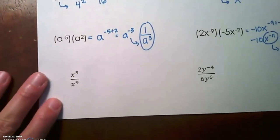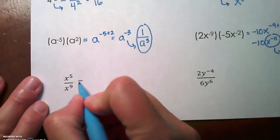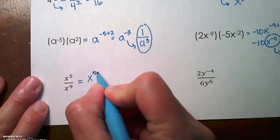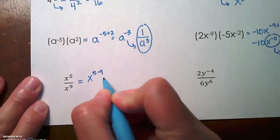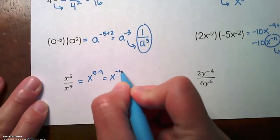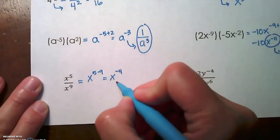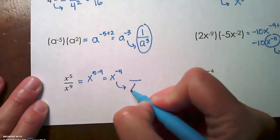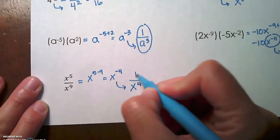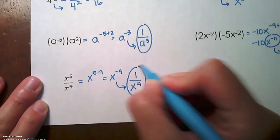x to the 5th divided by x to the 9th is x to the 5 minus 9, which is x to the negative 4. From here, we need to move that x to the denominator and make the exponent positive, giving us 1 over x to the 4th.